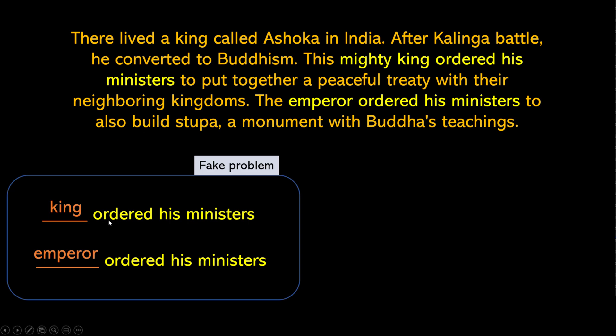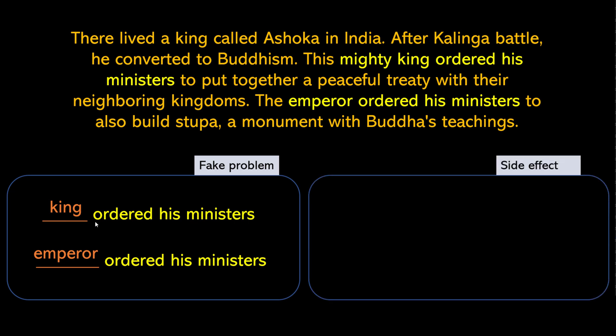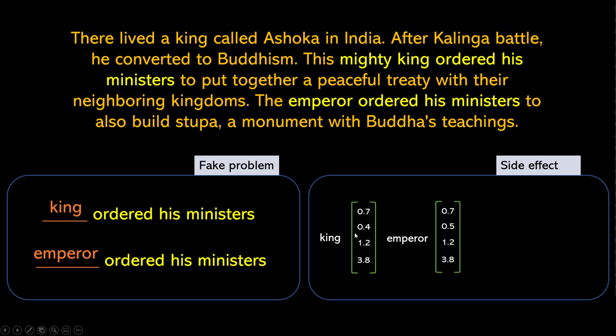When you give this task of filling in the missing word to a computer, as a side effect — and 'side effect' is a very important keyword here — it will learn the vectors for king and emperor. These are those feature vectors. Once you have these vectors you can do math: you can say king is almost equal to emperor. You'll be able to derive synonyms, antonyms, and do math such as king minus man plus woman equals queen.